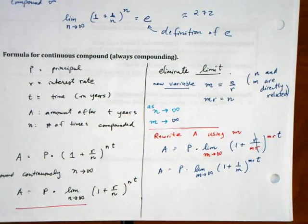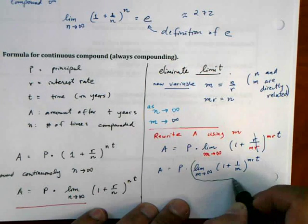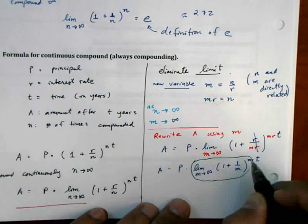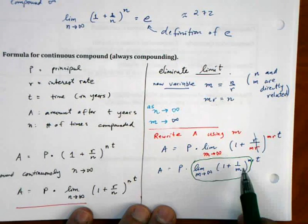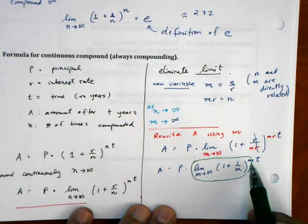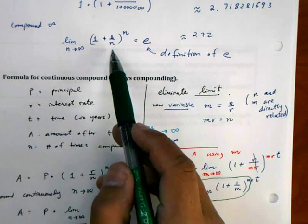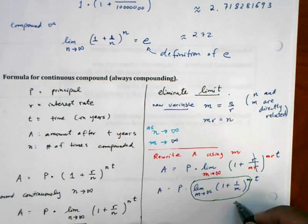But if you look at just this limit right here, every part that has the letter M in it, limit as M approaches infinity of 1 plus 1 over M raised to the M, that's the definition of E. We used a different variable here, but the format is exactly the same. So this whole part right here is equal to E.